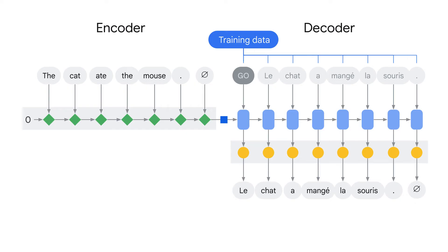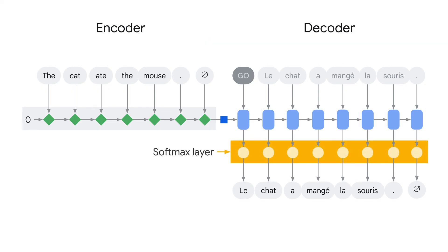This method of training is called teacher forcing because you force the decoder to generate the next token from the correct previous token. This means that in your code, you'll have to prepare two input sentences: the original one fed to the encoder, and also the original one shifted to the left that you'll feed to the decoder. Another subtle point is that the decoder generates at each step only the probability that each token in your vocabulary is the next one. Using these probabilities, you'll have to select a word, and there are several approaches for that.